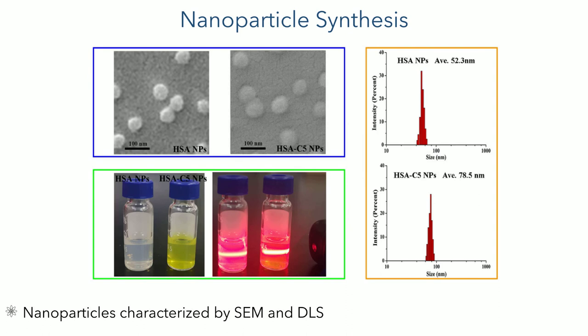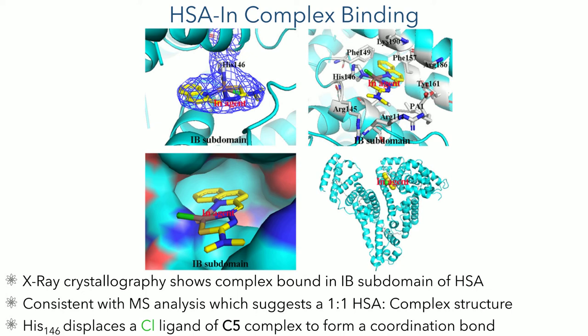These nanoparticles were characterized using scanning electron microscopy and dynamic light scattering. This showed that the nanoparticles prepared with complex 5 added were approximately 50% larger than those produced with HSA alone. The nature of the binding between the indium complex and the HSA particle was then elucidated using X-ray crystallography. These studies showed one molecule of the indium complex bound within the 1B subdomain of HSA, consistent with mass spec analysis indicating a 1-to-1 ratio of indium complex to HSA protein within the nanoparticle. Upon binding to the albumin, one of the chloride ligands is lost and instead a coordination bond is formed to histidine 146.